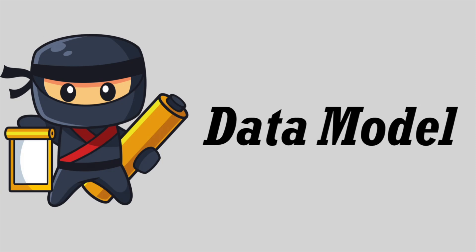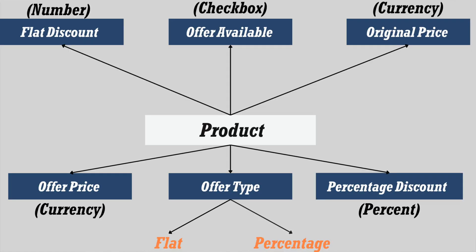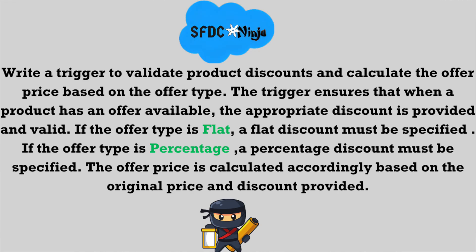So just like every video, let's first understand the data model for today's scenario. The object we are going to use today is Product, which is a custom object. On this object we have different fields: flat discount field of number type, offer available field of checkbox type, offer price field of currency type, offer type field of picklist type containing values flat and percentage, original price field of currency type, and percentage discount field of percent type.